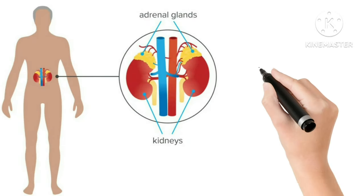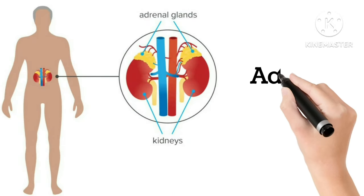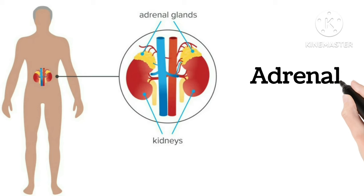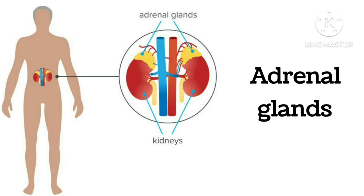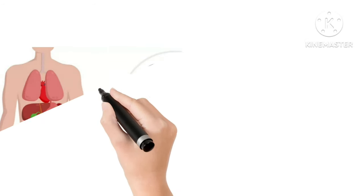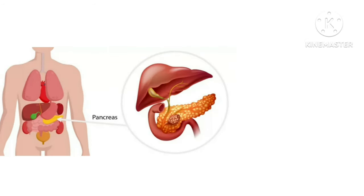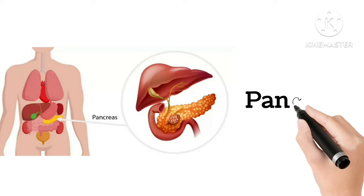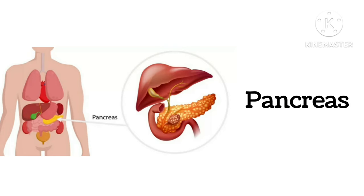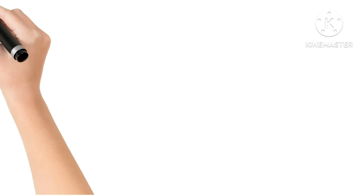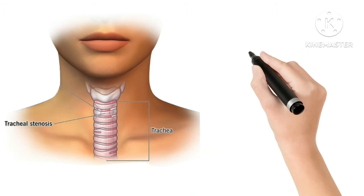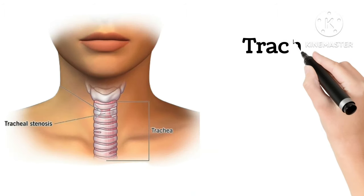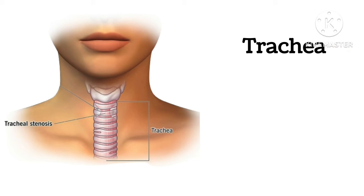Adrenal glands — these are our adrenal glands. Pancreas — this is our pancreas. Trachea — this is the trachea.